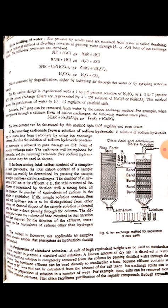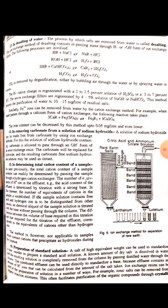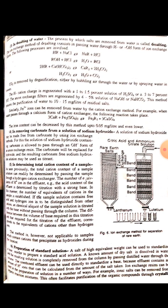The hydrogen cation charge is regenerated with a 1 to 1.5% solution of sulfuric acid or a 3 to 7% solution of hydrogen chloride. The anion exchange filters are regenerated by 4 to 5% solution of sodium hydroxide or sodium bicarbonate. This method ensures the purification of water to 10 to 15 milligrams per liter of residual salts.